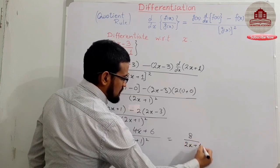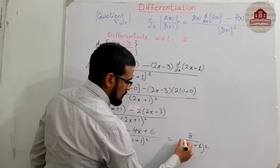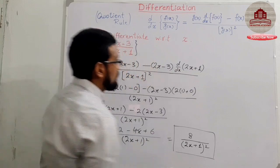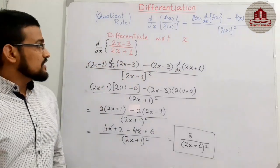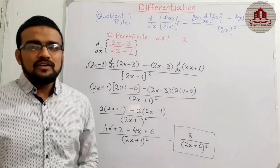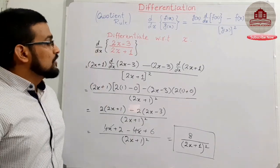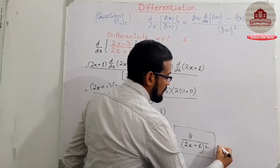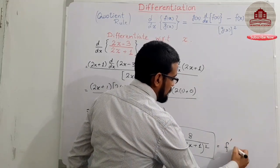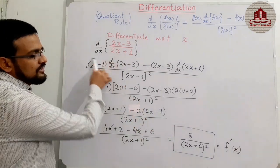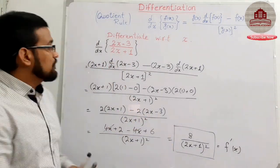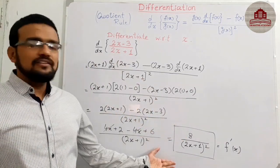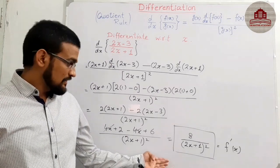Divided by (2x + 1) whole square — yes students, this is the final result of the derivative of this function (2x − 3) divided by (2x + 1) when resolved by the quotient rule. We can find the answer: f prime, where prime means derivative. If this is f then f prime, if this is g then g prime. This is the final result.